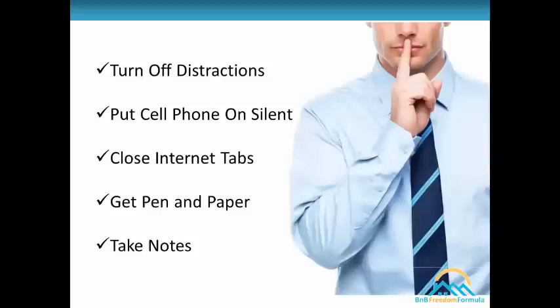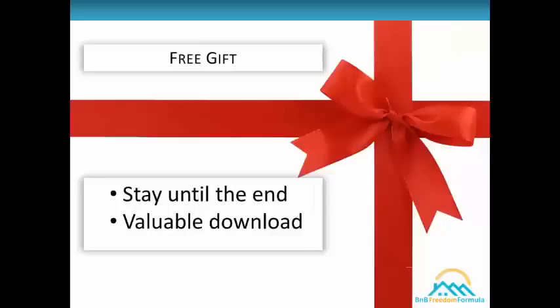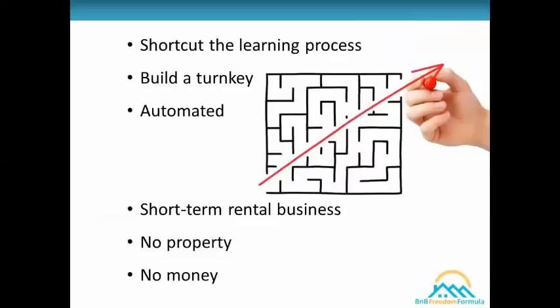So now we're going to get started. I want you to turn off all distractions, put your cell phone on silent, close out other internet tabs, and get out a pen and paper because you're going to want to take notes. At the end of today's presentation, I'm going to give you an incredibly valuable free gift — my three-step system for determining how much money your property can make with Airbnb, the five keys to finding a profitable location, the three secrets to picking the most profitable property with the least amount of risk, and my cash flow calculator.